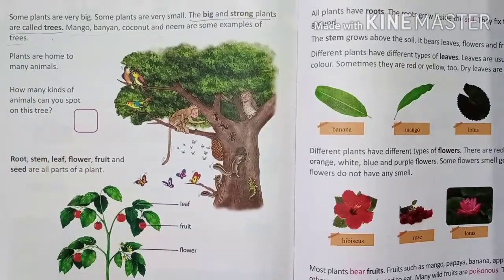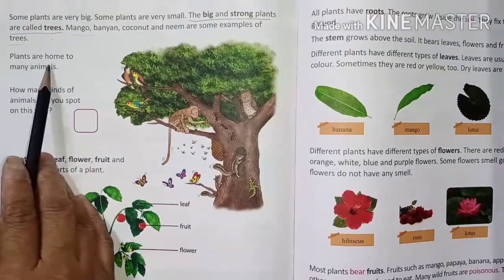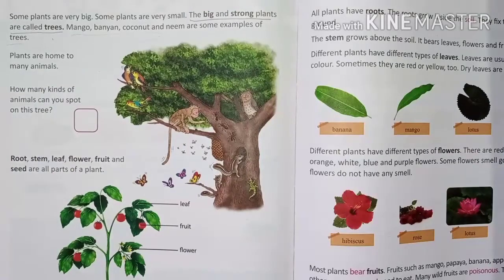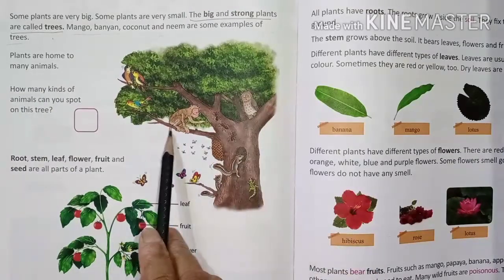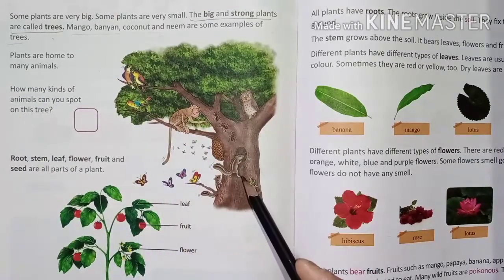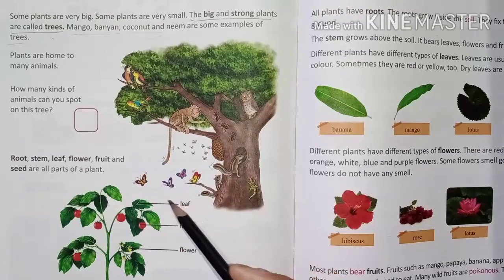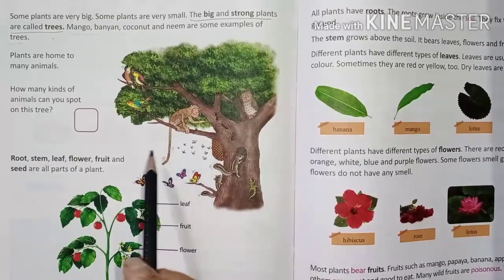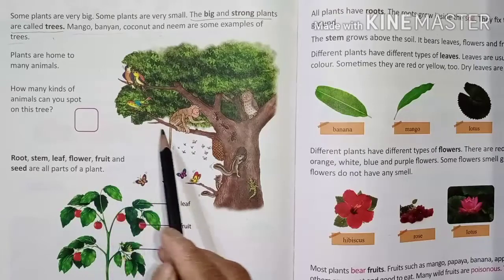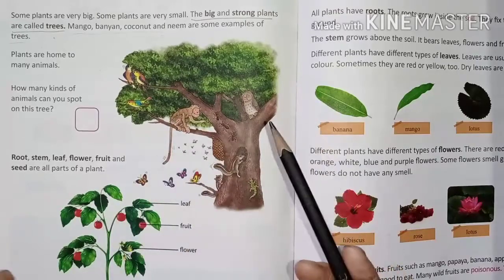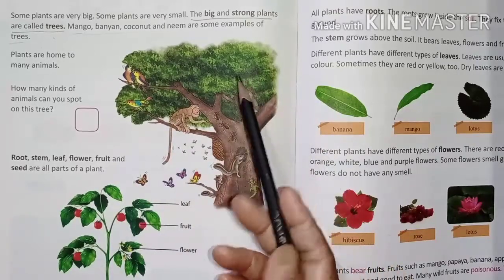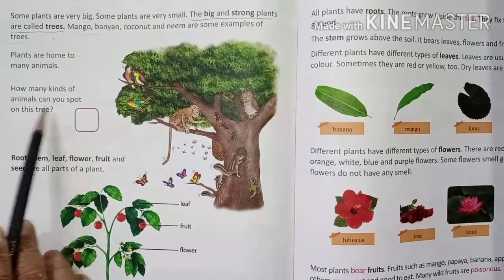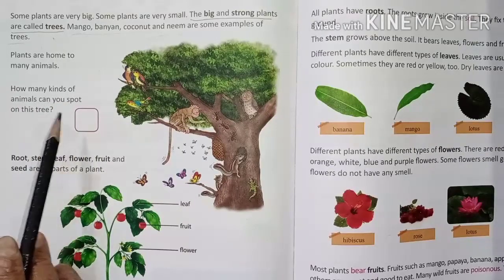Plants are home to many animals. Who lives on the trees? Monkey, owl, squirrels, butterflies, lizards, sparrows, and many birds — they live on the trees. How many kinds of animals can you spot on this tree?